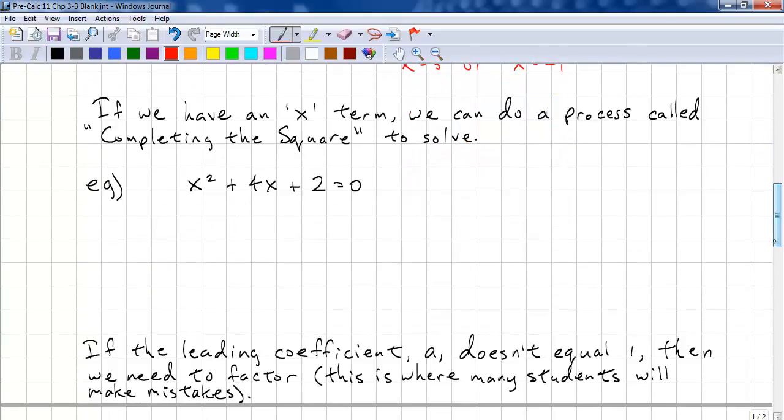Another way we can solve when we have an x term is to complete the square. So what we have to do is we have to isolate just the x terms. So x squared plus 4x. And we leave some space. So to complete this, we need to divide this by 2 and then square it. So 4 divided by 2, and squaring is 4. Okay, here's the trick. Because we've added 4, we need to subtract 4 outside.